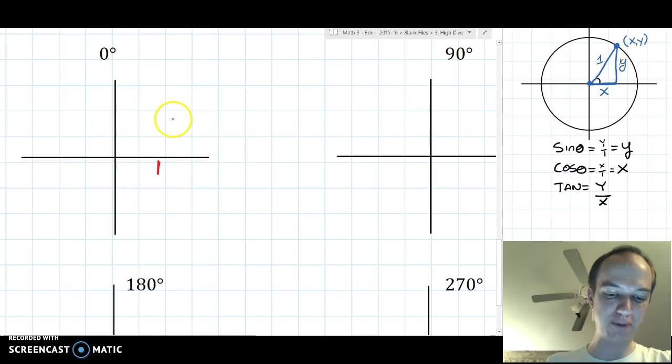This just gets super weird, so we're not even going to try to draw this triangle. Instead, we're going to just think about a point on the unit circle that is exactly one unit away from the origin. We'll call that one unit. So the coordinate of this point is going to be 1, 0.